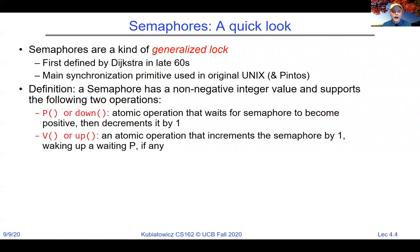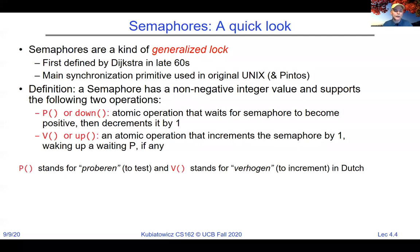P is an atomic operation that waits for the semaphore to become positive and then decrements it by one — some implementations call this the down operation. V is an atomic operation that increments the semaphore by one, and if somebody's waiting on it, it'll wake one of them up. P stands for proberen, meaning 'to test' in Dutch, and V stands for verhogen — Dijkstra's influence on this.